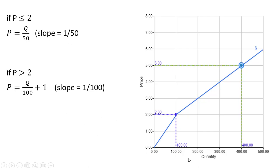We can verify by plugging in numbers: if Q equals 400, the price would be $5. If we plug in Q equals 100 into either equation, the price will equal $2. That's it — I'll stop here.